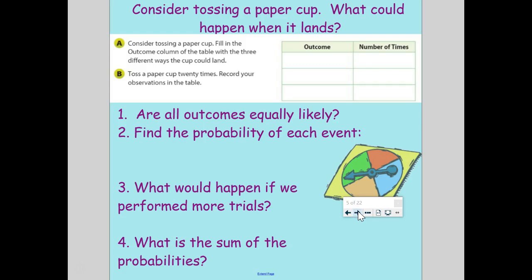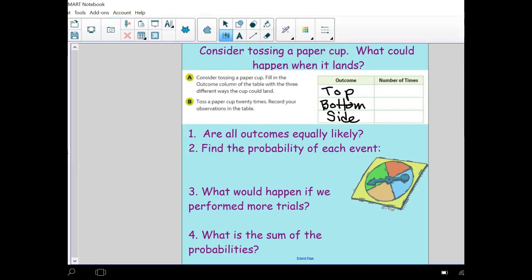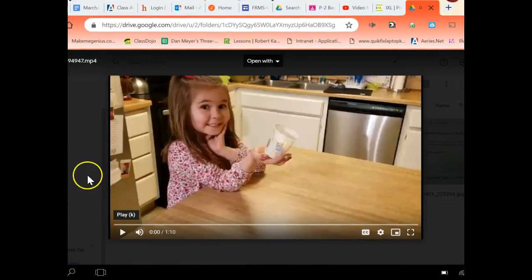If you think about taking a paper cup and throwing it in the air, what could happen when it lands? One thing is that it could land on its top, upside down, or it could land on the bottom, the way you'd normally put the cup before you pour something in, or it could land on its side. So there's three possible outcomes. It's natural to think there's a one-third chance of it landing on the top, one-third chance on the bottom, one-third chance on the side. But it's experimental probability, so let's do an experiment and see what actually happens.